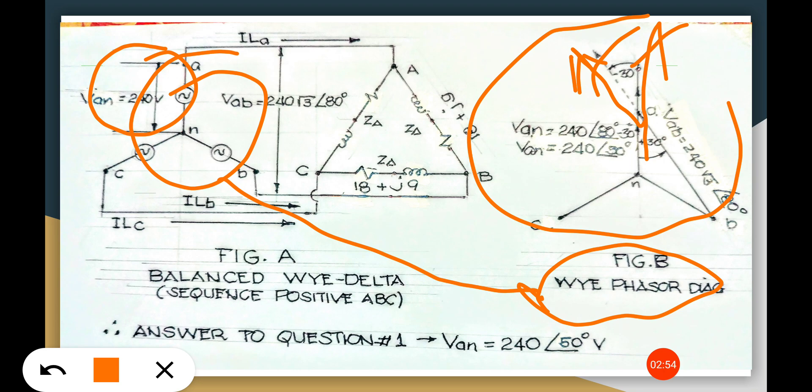So what does it mean? It means that this 80 degrees phase angle minus 30 is the phase angle of the Van 240V, which is 50 degrees angle.